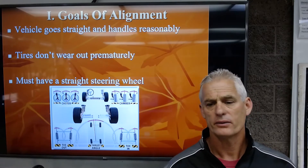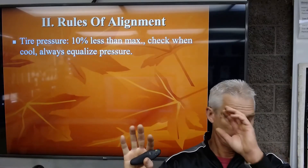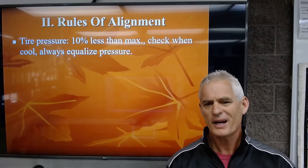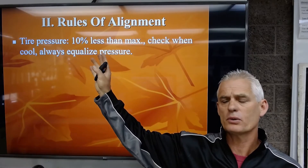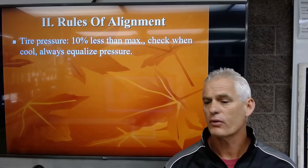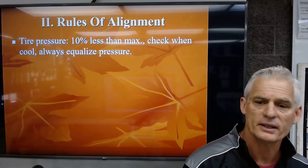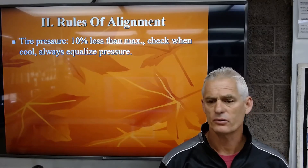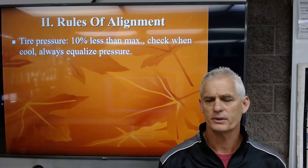Here are our rules of alignment, called the rules of one. First, tire pressure needs to be 10 to 15 percent less than the max listed on the sidewall. For a 44 PSI tire, 15 percent is 6.6 pounds, so roughly 37 to 38 pounds. Check pressure when cool, and equalize pressure equally on all four wheels.